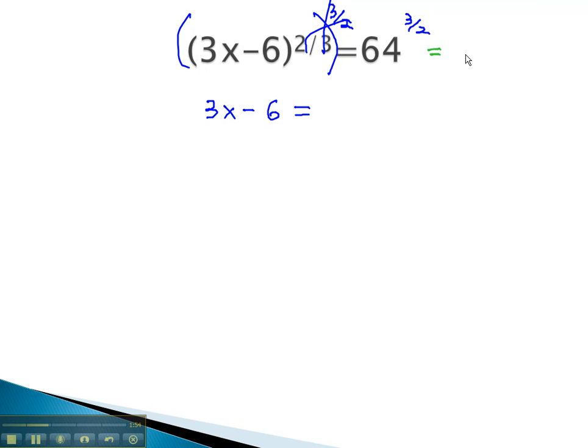On the right, we have the 3 halves power on 64. The denominator is the index. We want the square root of 64, and we'll cube the answer. Because we have an even root, this is actually going to have two solutions. We're actually clearing an even exponent. We need a plus or minus.